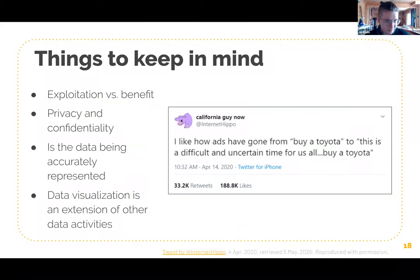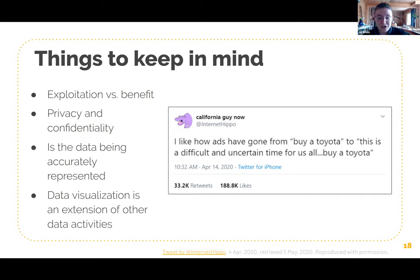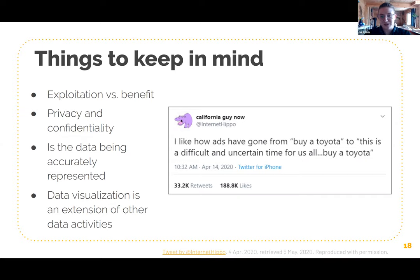Some ethical considerations: one of ALA's core values of librarianship is social responsibility — our services are intended to be beneficial to the community. Design choices, especially when using data viz for programming advertisements, can be used to benefit or exploit groups. You see this a lot with advertising. As this tweet from California Guy (@InternetHippo) observes: 'I like how ads have gone from: buy a Toyota, to: this is a difficult and uncertain time for us all. Buy a Toyota.' This has gotten worse throughout the COVID-19 pandemic.